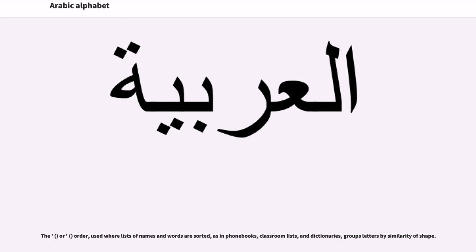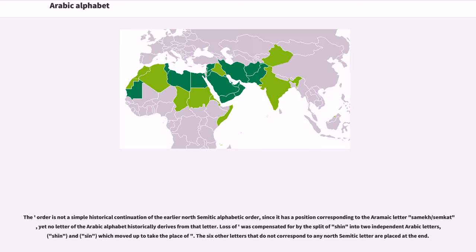The second order, used where lists of names and words are sorted as in phone books, classroom lists, and dictionaries, groups letters by similarity of shape. The order is not a simple historical continuation of the earlier North Semitic alphabetic order, since it has a position corresponding to the Aramaic letter Samkath, yet no letter of the Arabic alphabet historically derives from that letter.